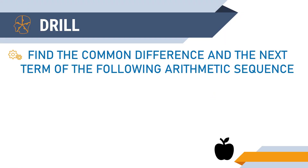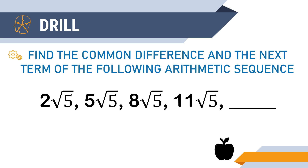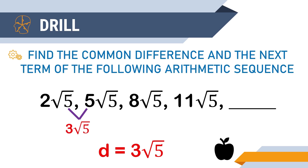Now let's have the last one: 2√5, 5√5, 8√5, and 11√5. The common difference is 3√5. You can get it by subtracting any consecutive terms — 5√5 minus 2√5 equals 3√5. And the next term is 14√5; you simply add 3√5 to 11√5.